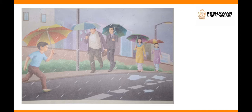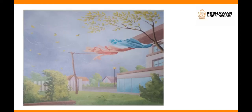In this picture you can see that there are some dark clouds in the sky. They must have brought rain, and the people are using umbrellas to keep themselves dry.